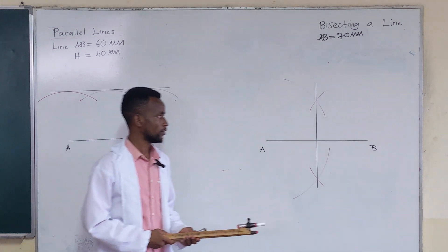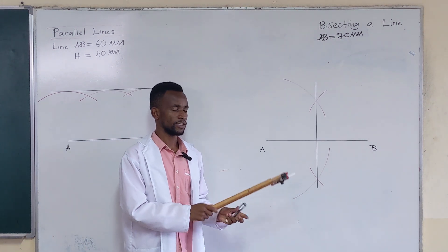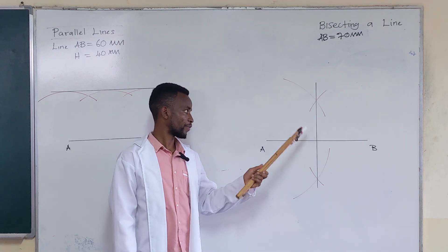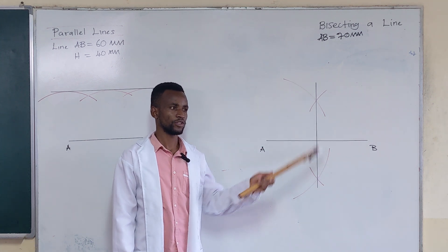So this line that we have drawn now is called the perpendicular bisector. It's a line that divides a given line into two equal parts, which is our line AB.